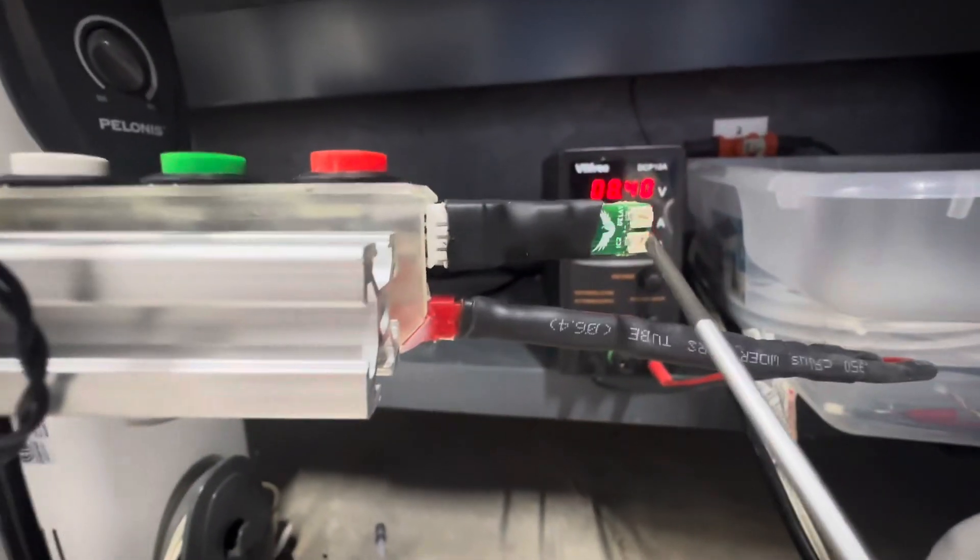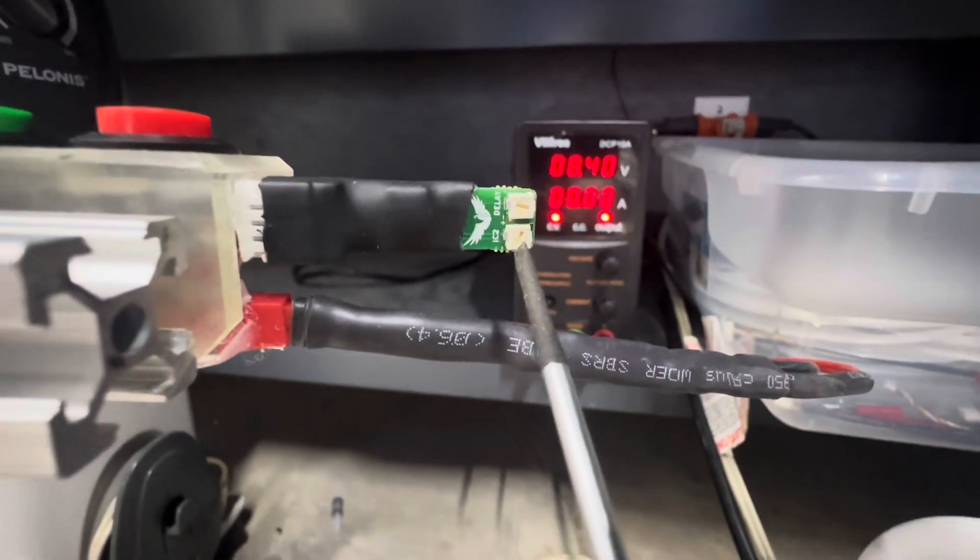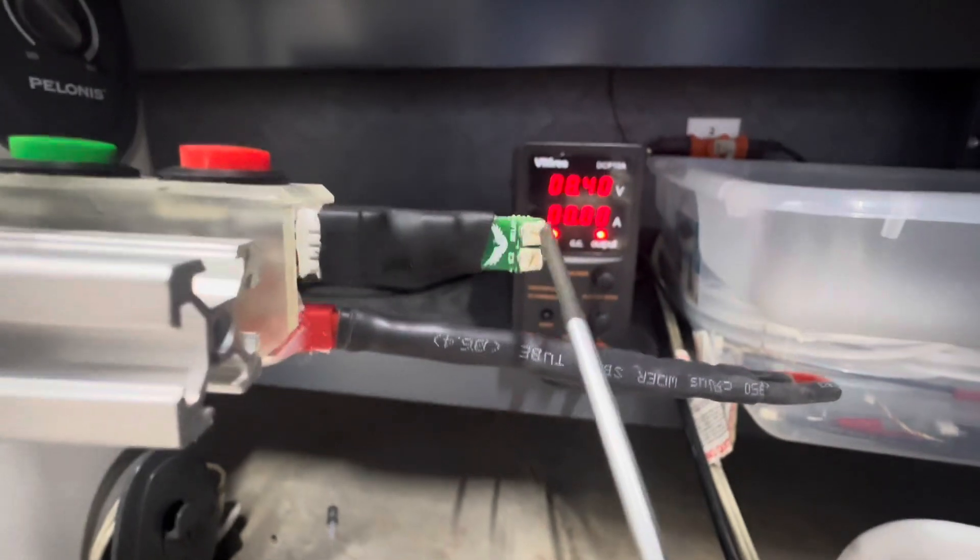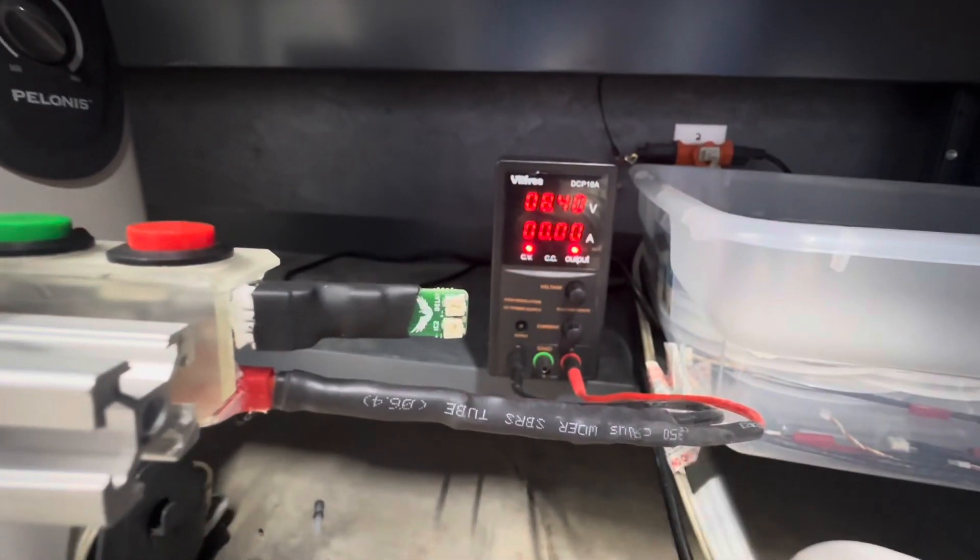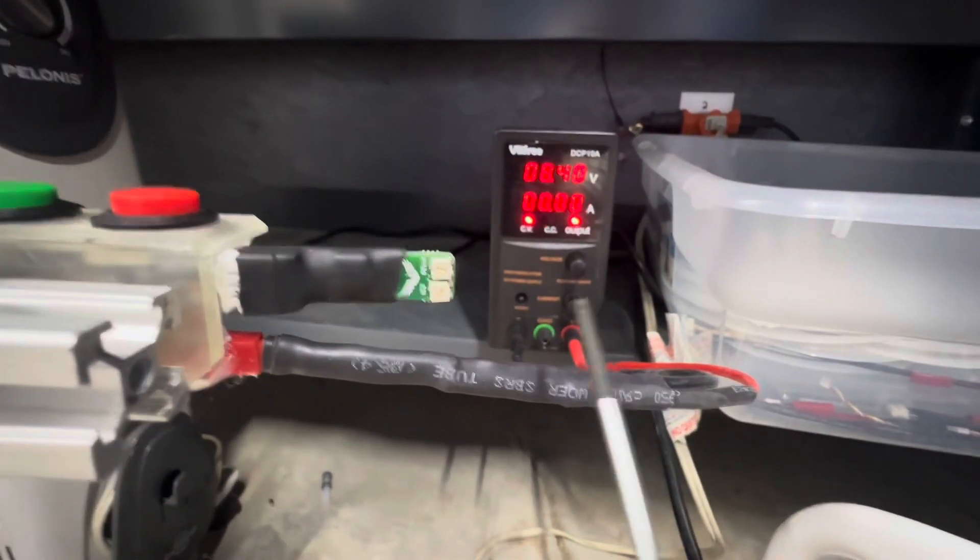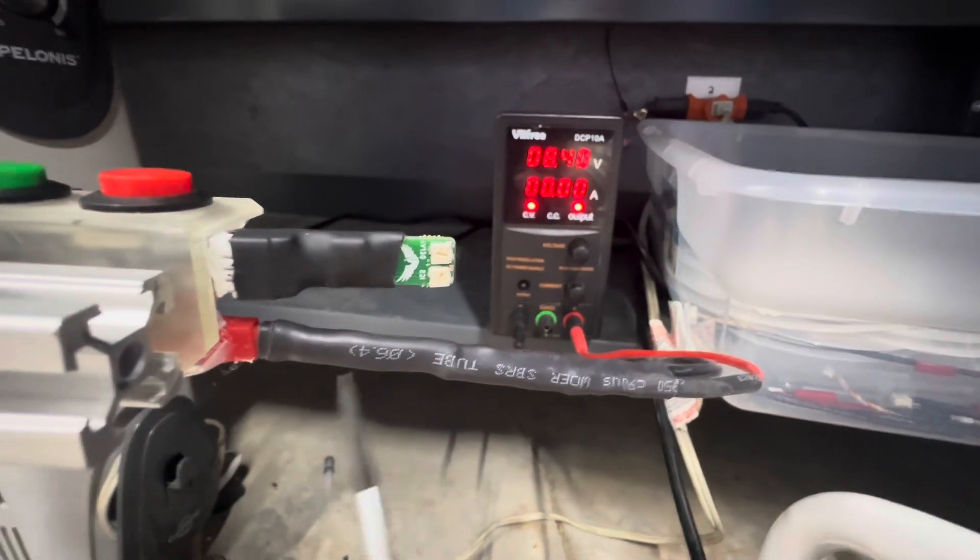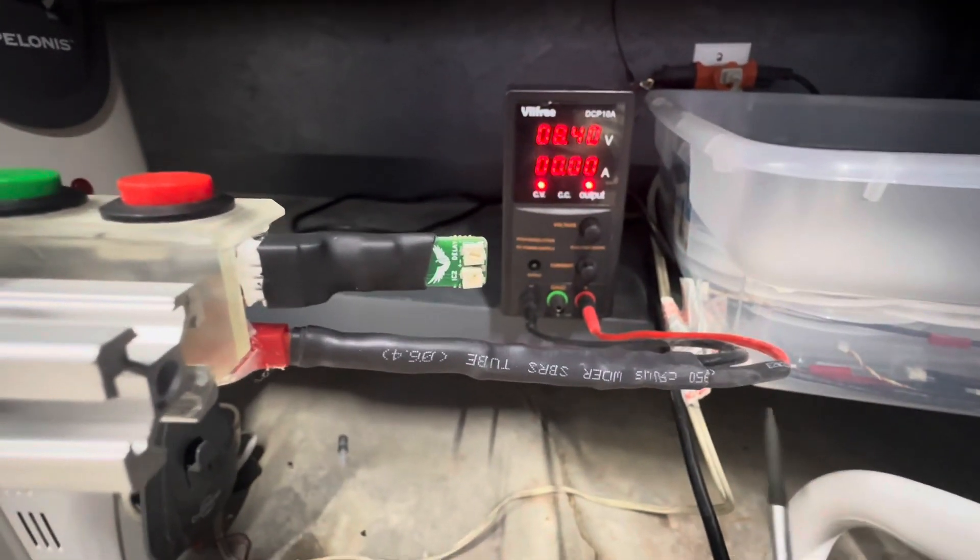Ideally, what you want to do is adjust your dwell to be as low as possible, and your delay to be either as fast as your gun will feed, or as fast as you want it to shoot, or the slowest would be if your field has weird limits.